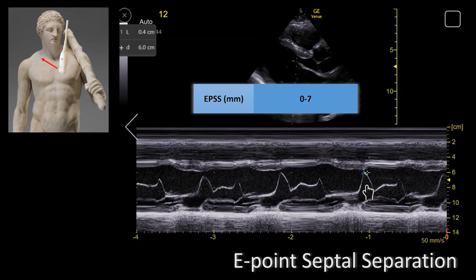The normal EPSS is anything between 0 and 7 millimeters. An EPSS of more than 7 millimeters corresponds to an ejection fraction of less than 30 percent, which is a severely reduced ejection fraction.